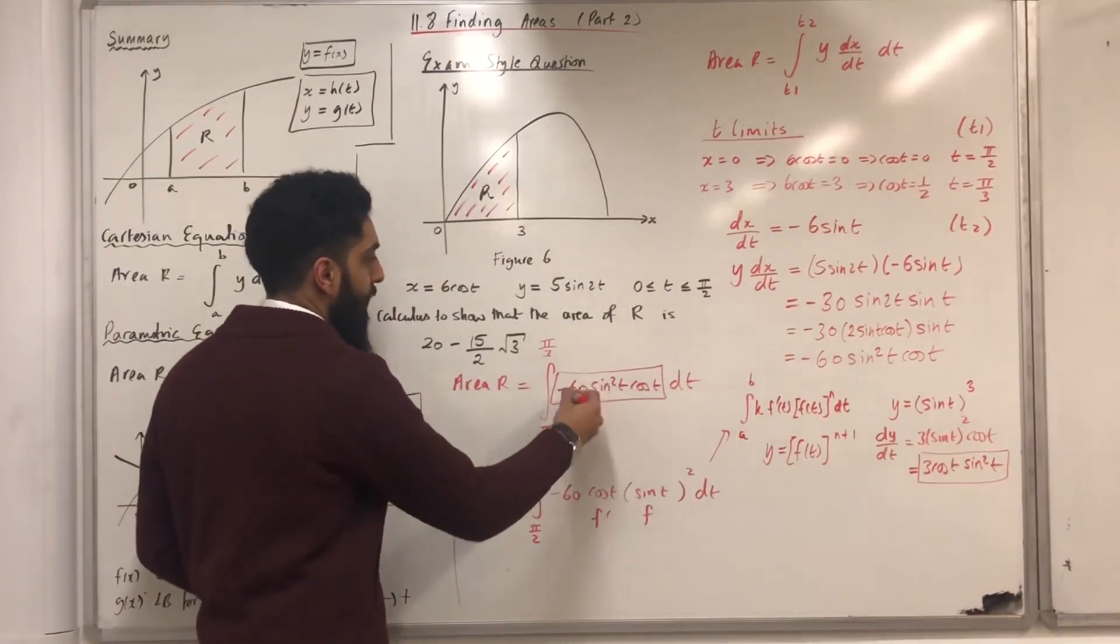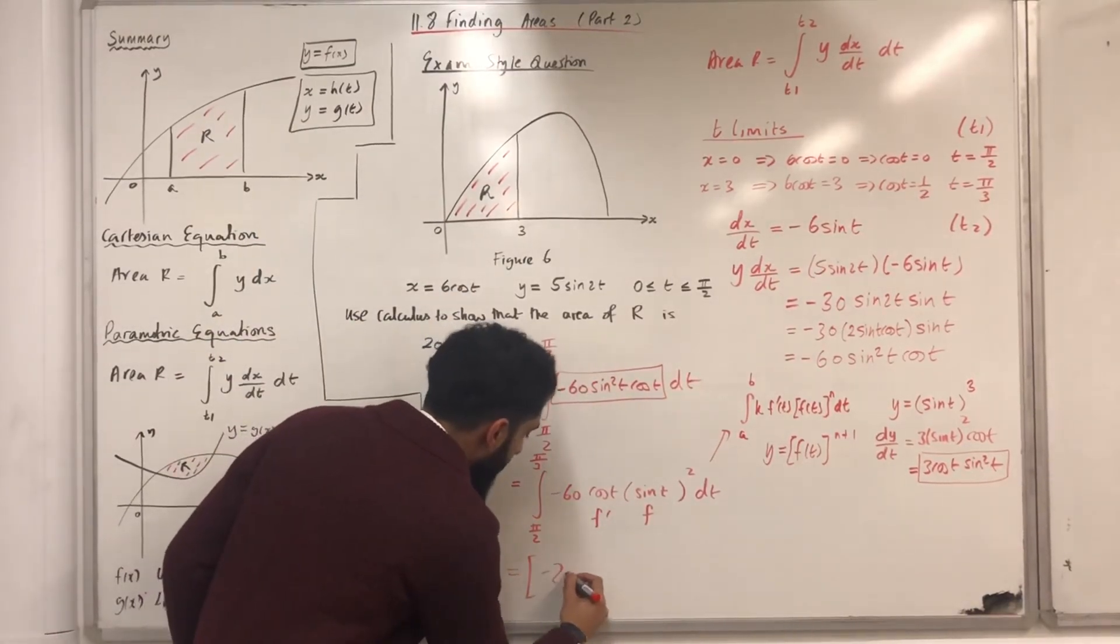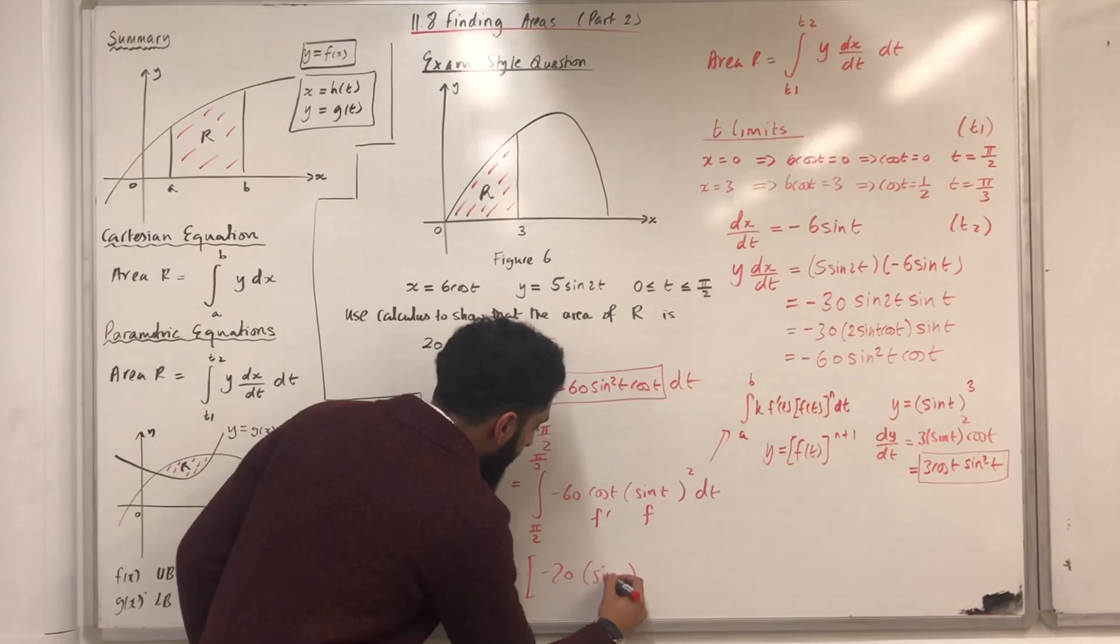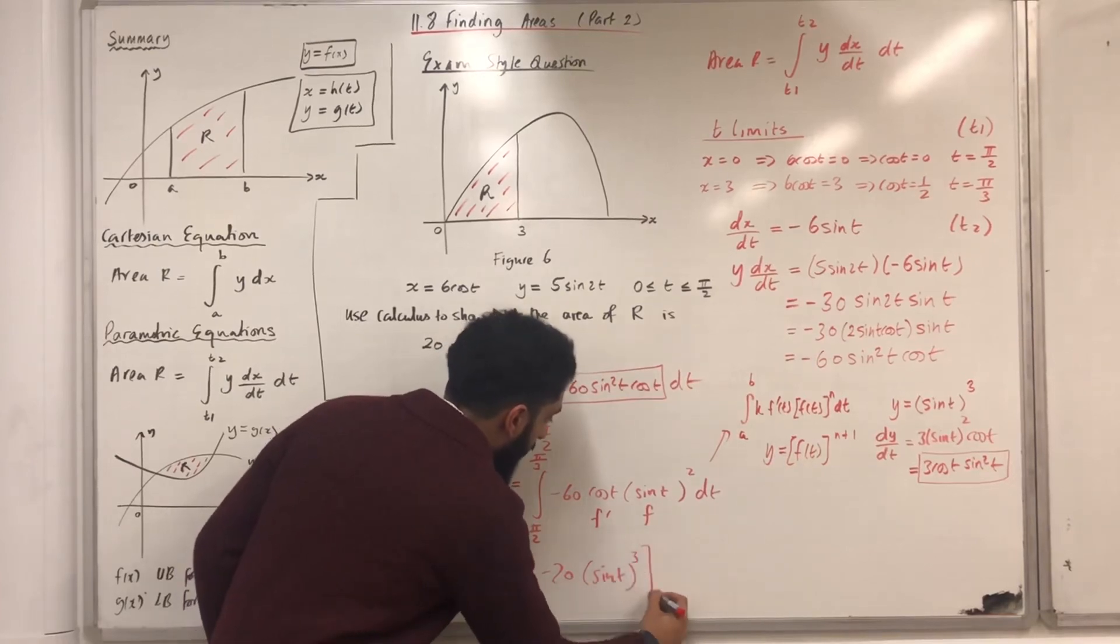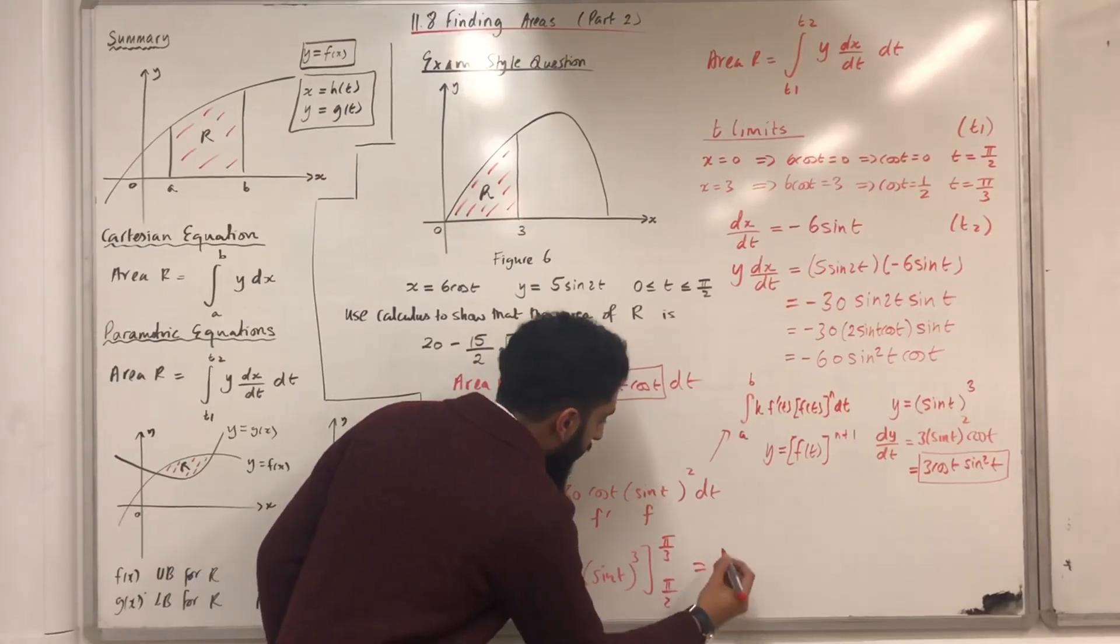So, the integral of this expression with respect to t is just minus 20 in brackets sine t to the power 3. We put in our limits, pi over 2 to pi over 3.